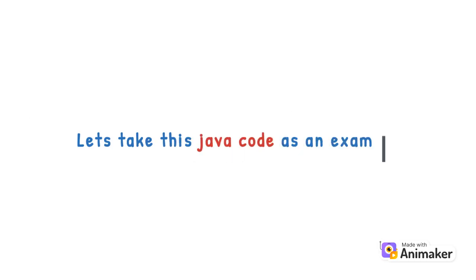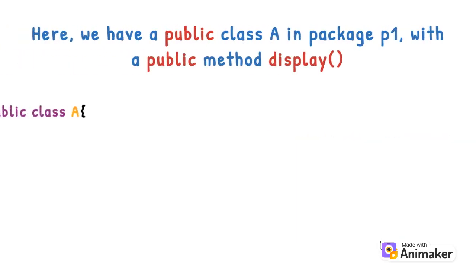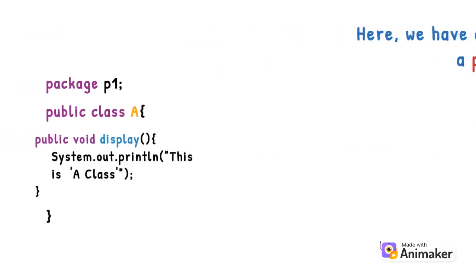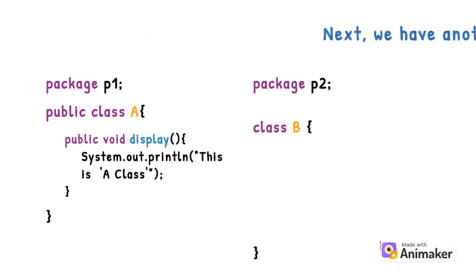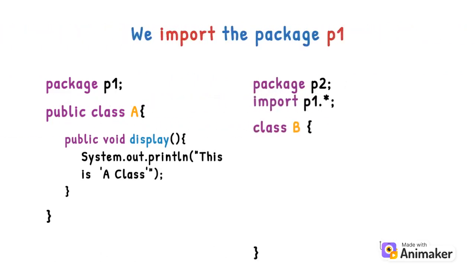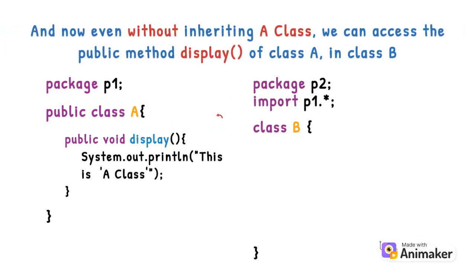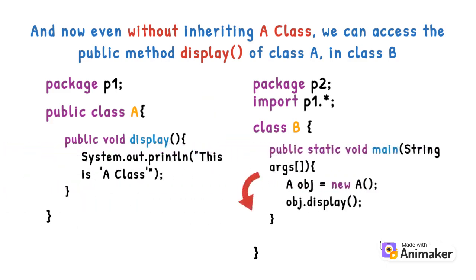Let's take this Java code as an example. Here, we have a public class A in package P1 with a public method display. Next, we have another package P2 with B class. We import the package P1, and now even without inheriting A class, we can access the public method display of class A in class B.